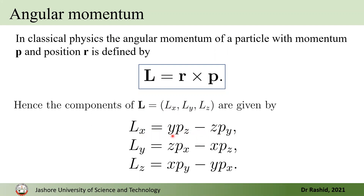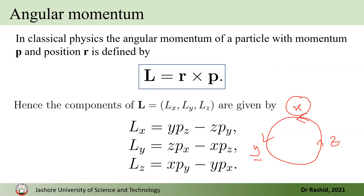Here the order actually doesn't matter — writing pz·y or y·pz is the same. But if we write it as shown, it's easy to recognize using a cyclic pattern: x, y, z. For the x component, you start with y then z component of momentum. For the y component, you start with z·px minus x·pz, following the cycle and swapping order in the second term.